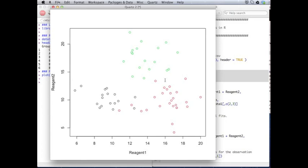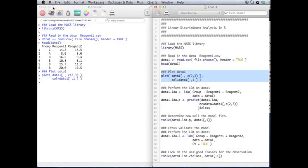So we have three distinct groups here and we want to find a linear discriminant analysis that will be able to tell, based off which reagent combination we have, the group it should be in.